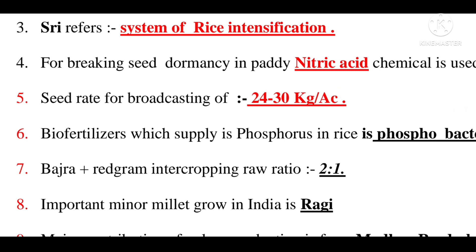Bajra and red gram intercropping row ratio — this ratio is ideal at 2:1 for Bajra and red gram intercropping.